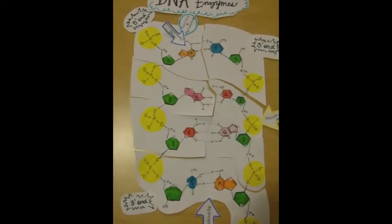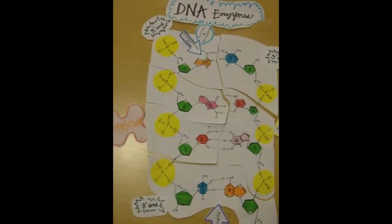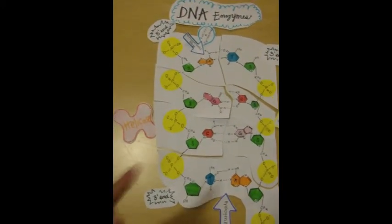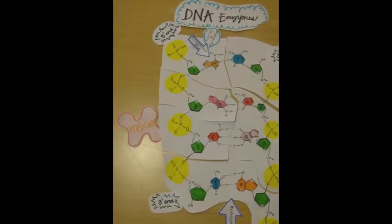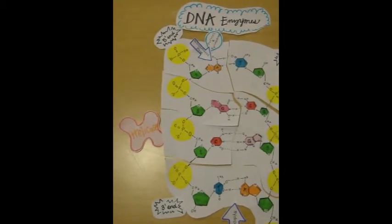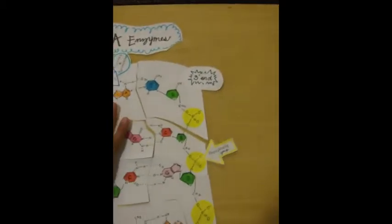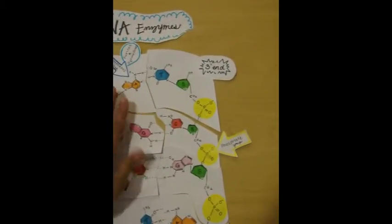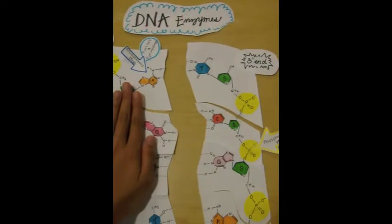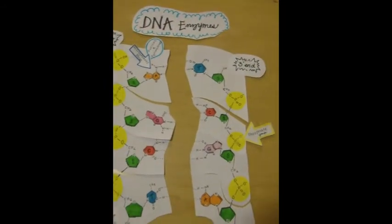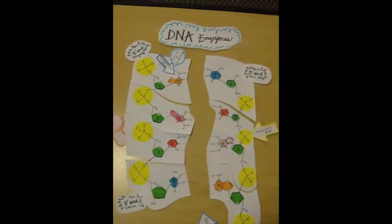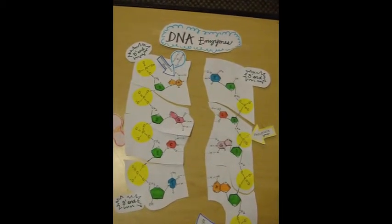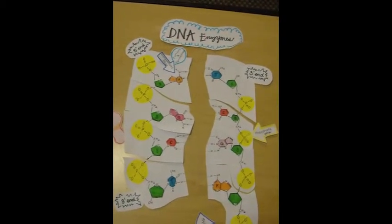When helicase is introduced to the DNA, it untwists the DNA for replication and the two strands split between the hydrogen bonds, making the strands available as template strands. This enzyme would be found in the nucleus for DNA replication.